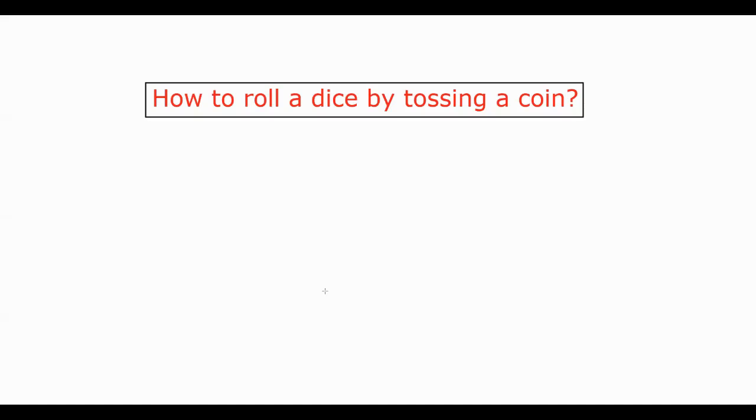So the question therefore comes: can you make a die, a virtual die, out of a coin? The question revolves around the fact that can you make a coin behave like a die by tossing it multiple times? That's the question we are going to address today, and believe me or not, you need nothing more than basic probability and conditional probability.